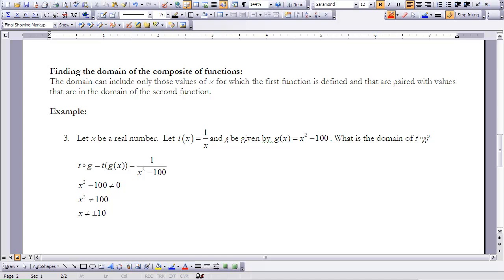Throughout this course, we've been studying functions and looking at the domain of all our functions. So let's explore the domain of composite functions. The domain can include only those values of x for which the first function is defined, and that are paired with values that are in the domain of the second function. I know that I can have a set of all real numbers, but my second function here is 1 over x, and we know that 0 cannot be in the domain. So if I do a composite, I have a limitation that my value for x cannot be 0.